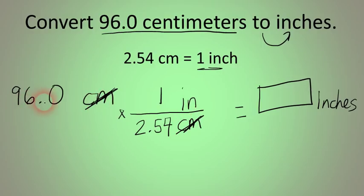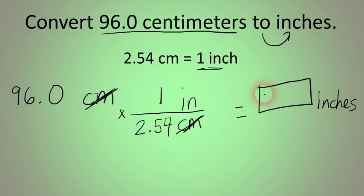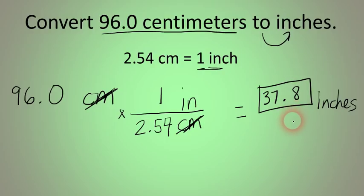We're going to take 96.0 times 1 divided by 2.54. Anytime there's a number in the denominator, we divide by that number. The answer is very close to 37.8 inches. Hopefully when you key that into your calculator you get the same answer: 37.8 inches. These are very simple conversion factors with only one unit conversion step.